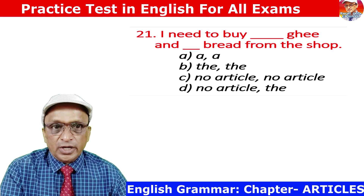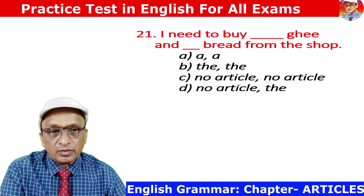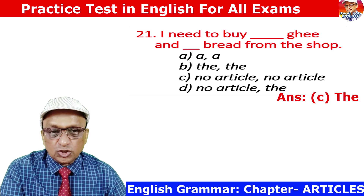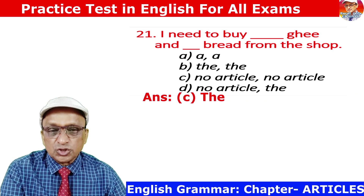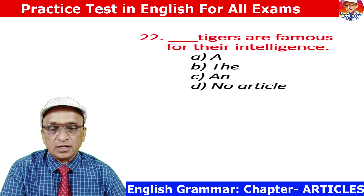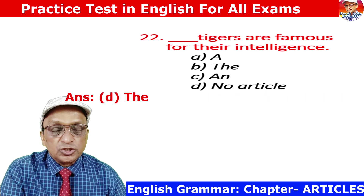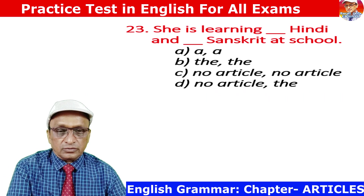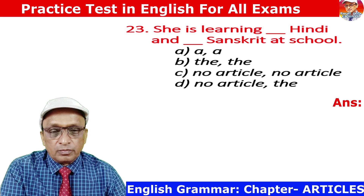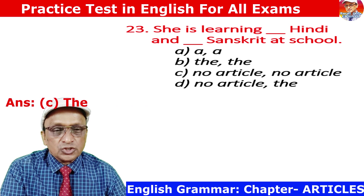Question 21: I need to buy ghee and bread from the shop. Ghee and bread are material nouns, so no article is to be used. Answer is C. Question 22: Tigers are famous for their intelligence. Tigers is a common noun used in a general sense, so no article is to be used. Answer is D. Question 23: She is learning Hindi and Sanskrit. Hindi and Sanskrit are proper nouns, so no article is to be used. Answer is C.